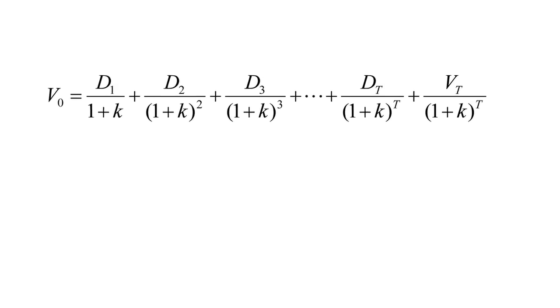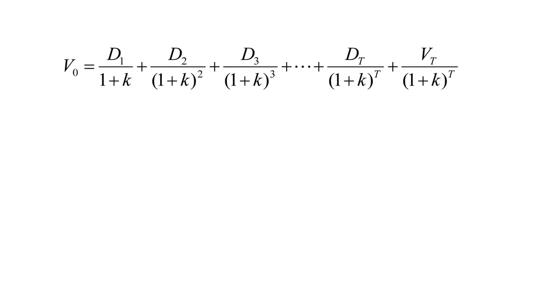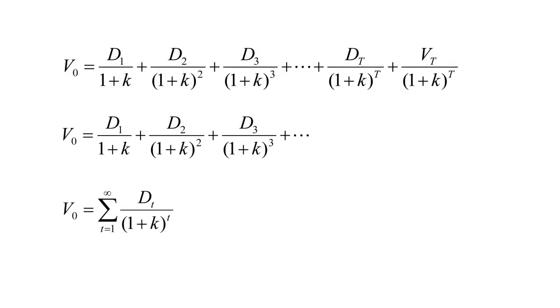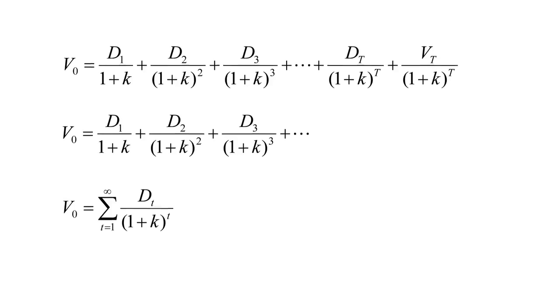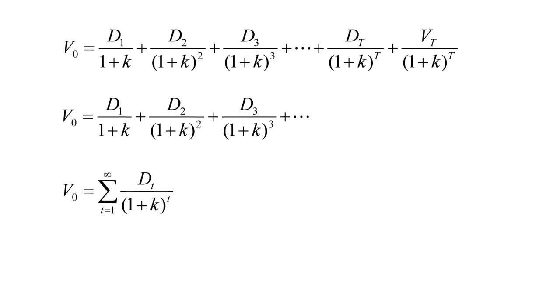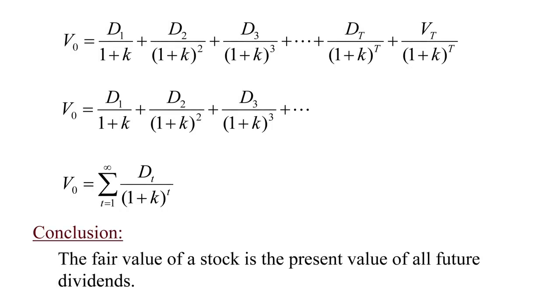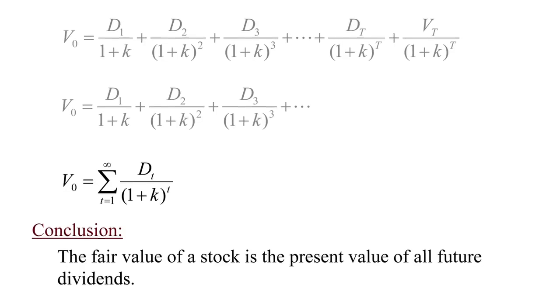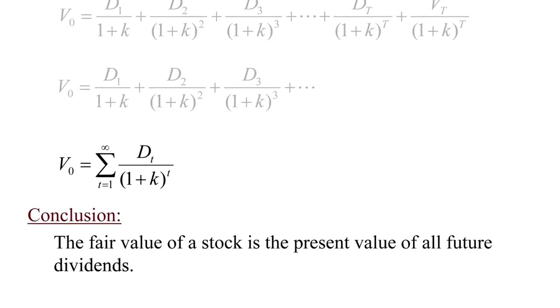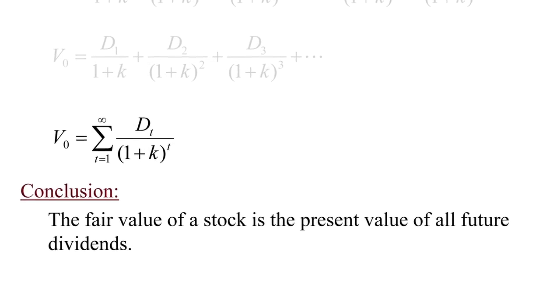If we do this forever, because of course theoretically a stock is infinitely lived, then we end up with an infinite sum of these dividends. You see that in the final term here on this page. V zero is just the infinite sum of all the dividends to be received. So the fair value of a stock is simply the present value of all future dividends. If we know what dividends the stock will pay, we know what the intrinsic value of the firm is.